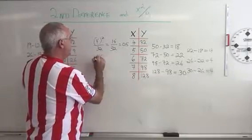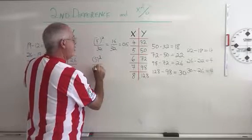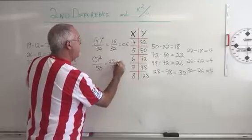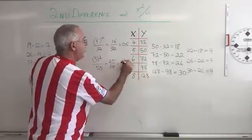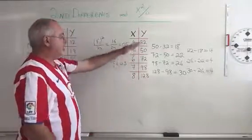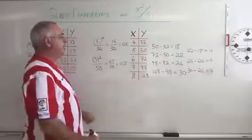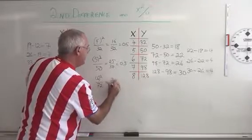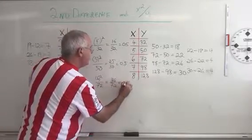5 squared over 50 is equal to 25 over 50, which is 0.5. I'm getting a constant answer, and I can keep on doing that with the other points in the table. 6 squared over 72 is equal to 36 over 72 equals 0.5.